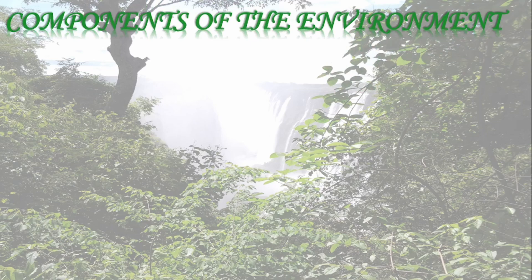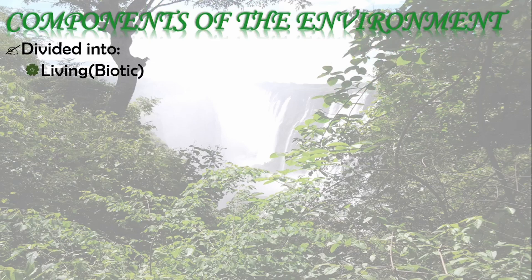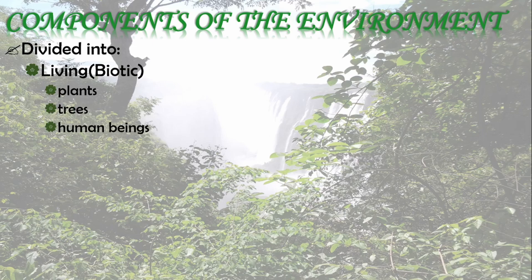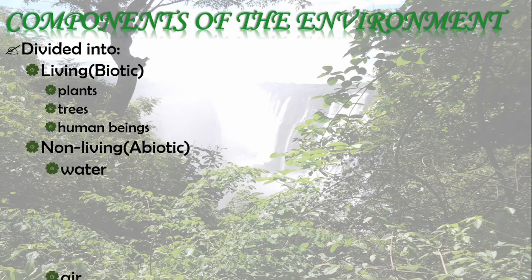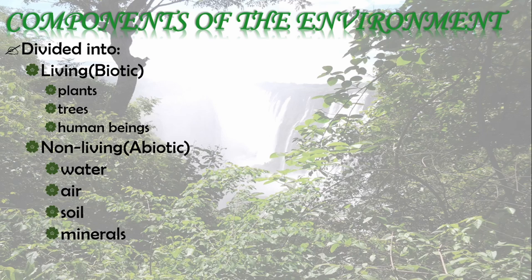Others have looked at the components of the environment as divided into two: living, which is also known as biotic — for example trees, animal life, plant life, and human life — and non-living, or abiotic, which includes water, air, soil, and minerals.